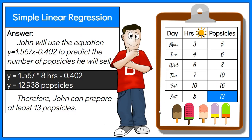To answer the problem, which is how many popsicles John will prepare for a Saturday that is predicted with 8 hours of sunshine, he will use the equation y equals 1.567x minus 0.402. The result is 12.938. Therefore, John can prepare at least 13 popsicles.